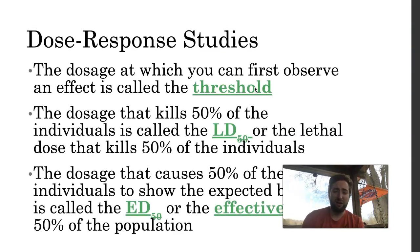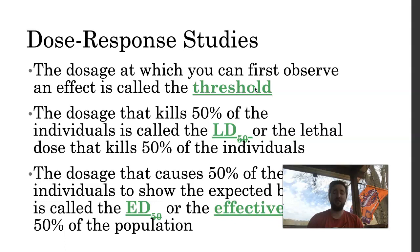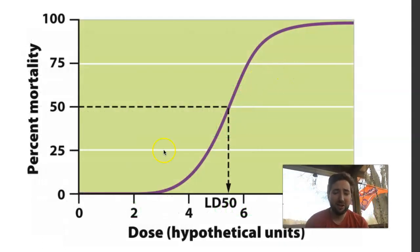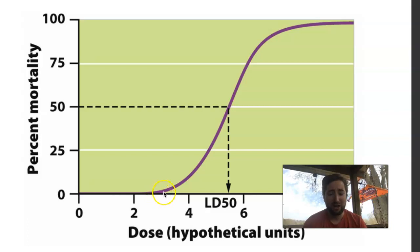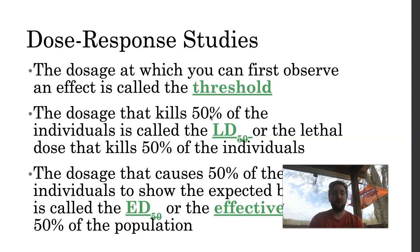Let's talk about some vocabulary words associated with dose-response studies. You may see a question that asks: around what concentration is the threshold dosage? The threshold dosage is going to be the one where you first start to see a response. For example, if down at the very bottom you have no individuals dying, and then around a concentration of 3 you start to have some individuals die, I would say the threshold dosage for that chemical is around 3 in whatever the units are. The dosage that kills 50% of the individuals is called the LD50 — the lethal dosage that kills 50% of the individuals.